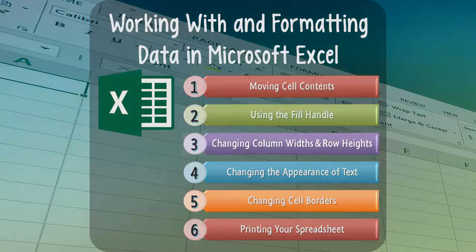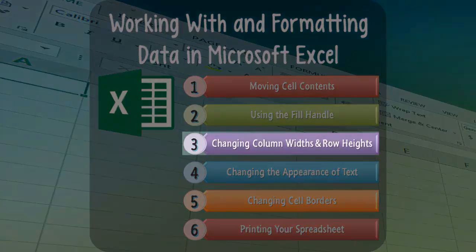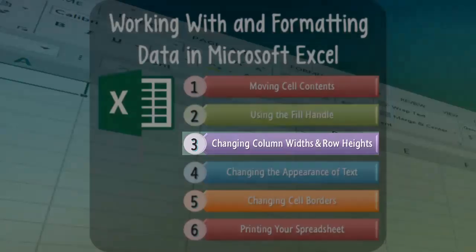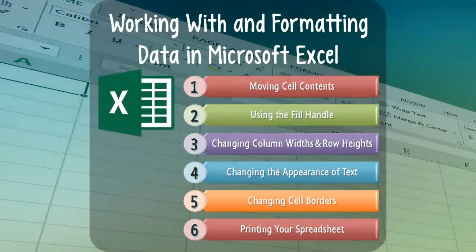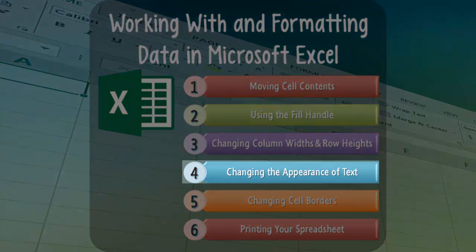Next, we'll learn several different methods for changing the width of a column or the height of a row in an Excel spreadsheet. Our fourth topic will focus on changing the appearance of the text on a spreadsheet, including how to merge cells, change fonts and font sizes, make the text bold, italic, or underlined, change the alignment of the text, and change both the color of the text and the background color of a cell.